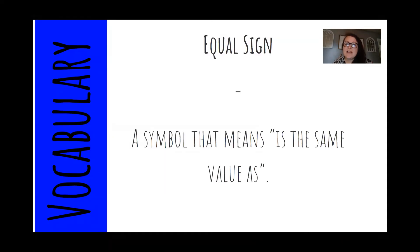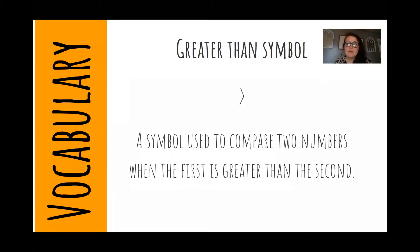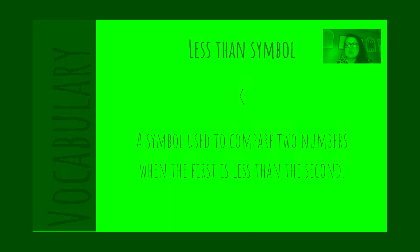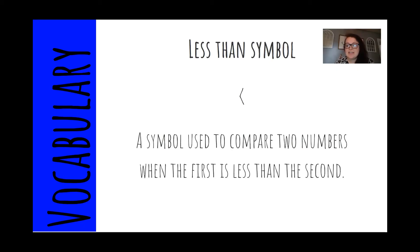The equal sign is a symbol that means is the same value as. The greater than symbol is a symbol used to compare two numbers when the first is greater than the second. The less than symbol is a symbol used to compare two numbers when the first is less than the second.